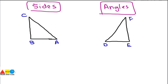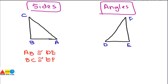First, we will look at the sides of these two triangles. There must be a one-to-one correspondence between the sides: AB must correspond to DE, BC corresponds to EF, and AC corresponds to DF. So we can write: AB is congruent to DE, BC is congruent to EF, and AC is congruent to DF. This is the condition for the sides.